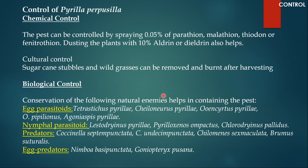Let us talk about how we can control Pyrilla purpusilla. The first method is chemical control. We can use organophosphate pesticides or organochlorine pesticides. Parathion, Malathion, Thiodan, or Fenitrothion can be used by spraying at 0.05%, or 10% aldrin or dieldrin can also be used.